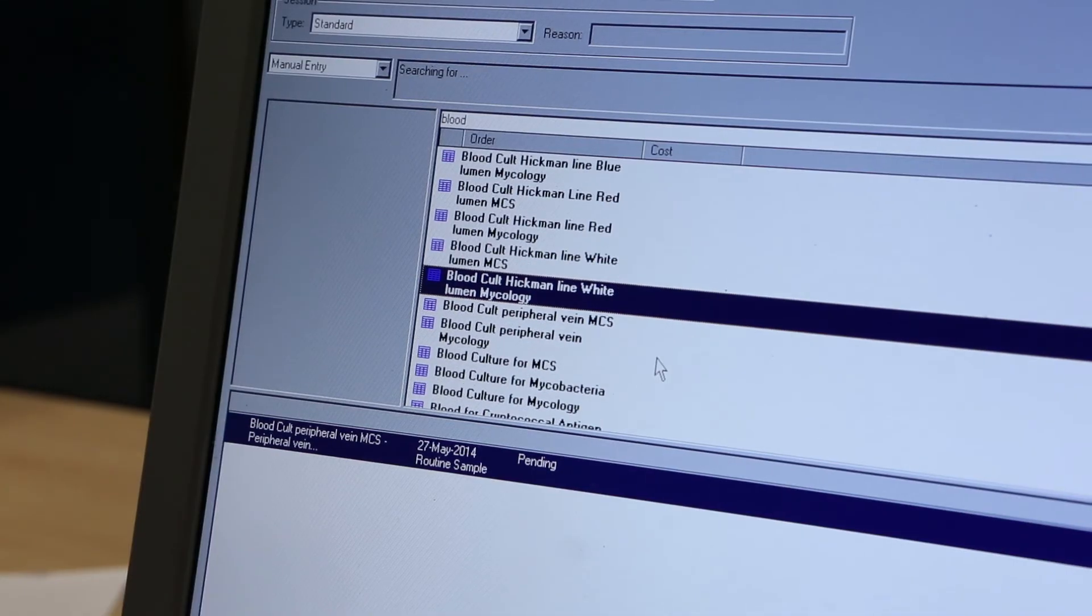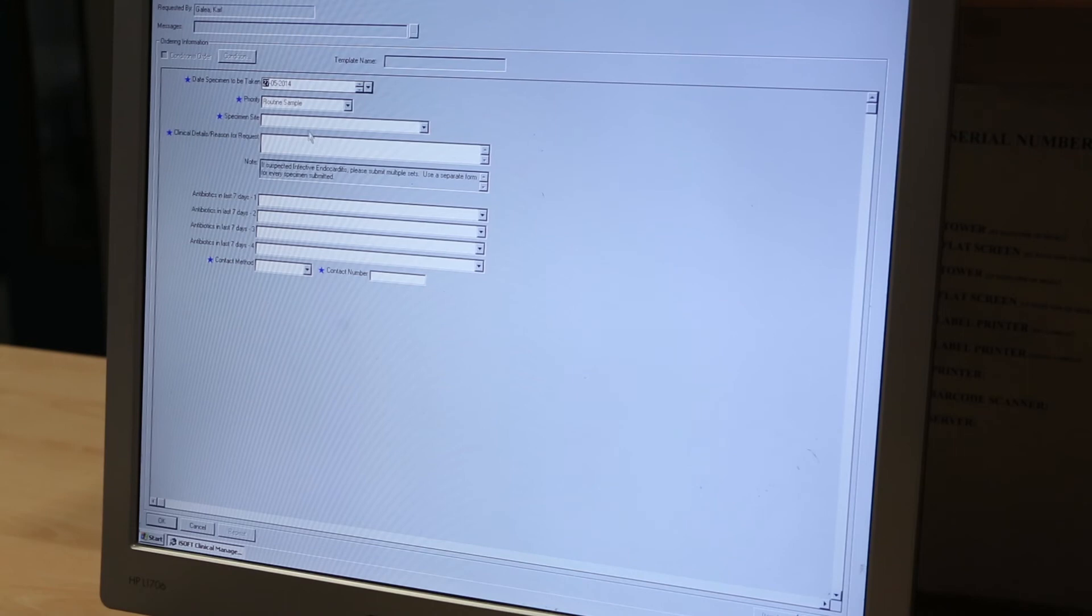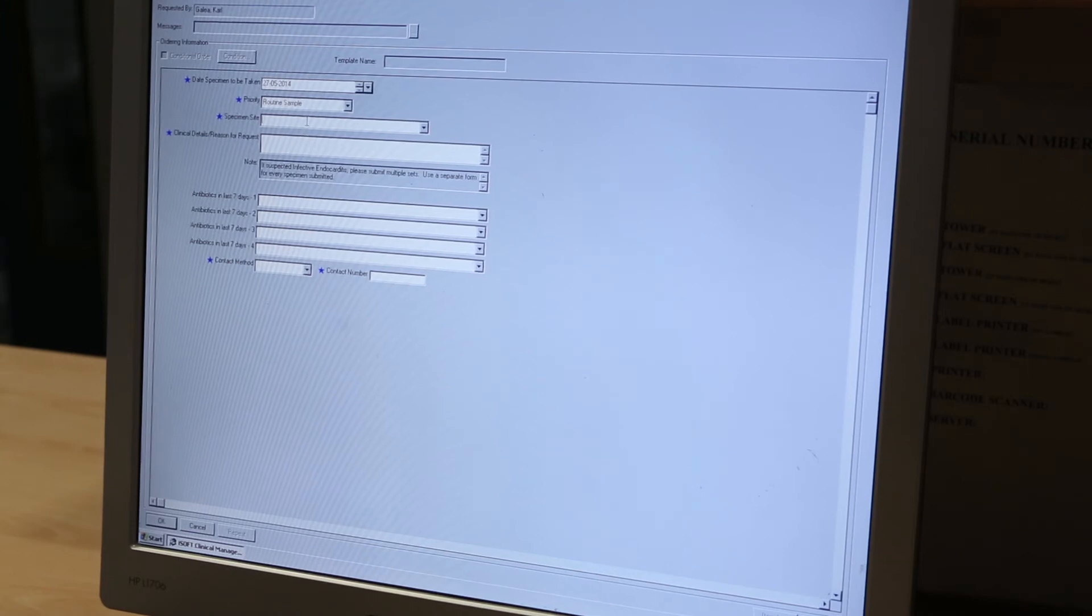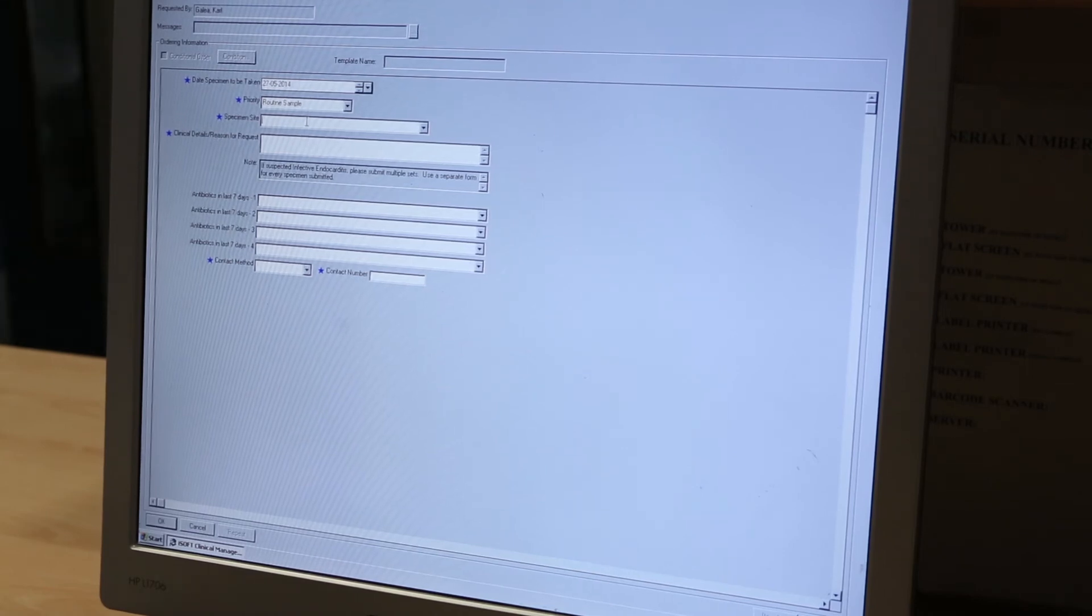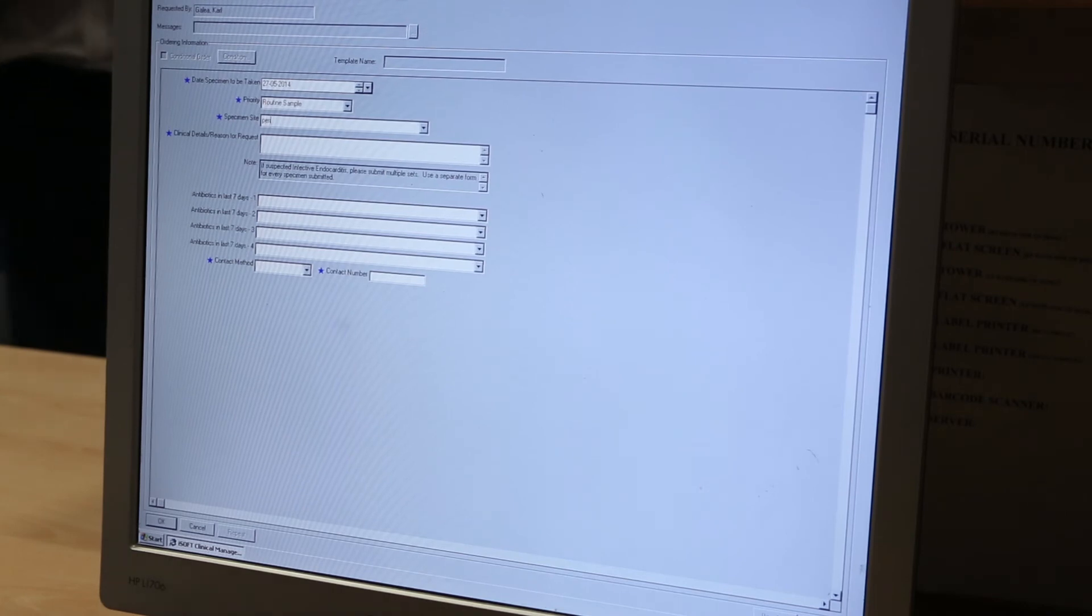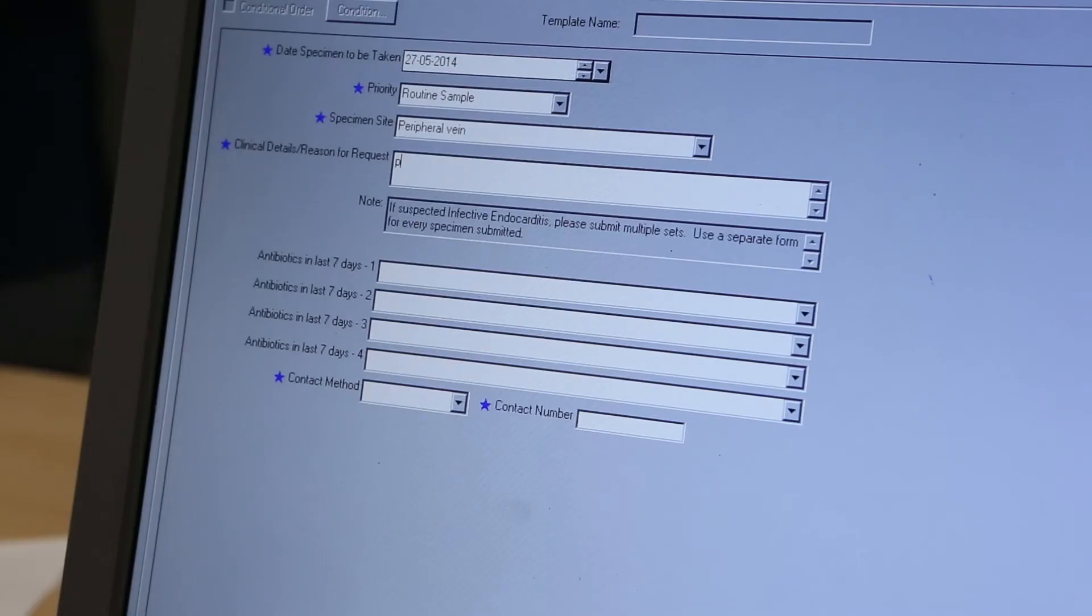An online request needs to be filled in for each individual bottle. Select the appropriate microbiological investigation making sure that the blood culture for mycology, mycobacteria or from central lines are requested using their own specific request. Provide appropriate clinical details such as travel history, animal contact, and presumptive diagnosis.